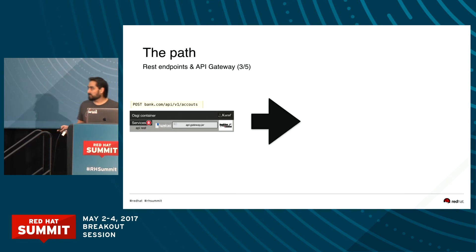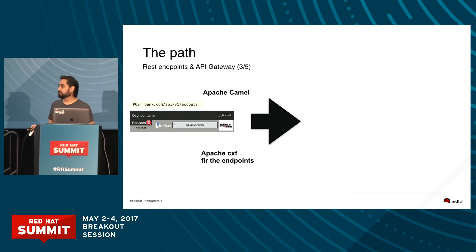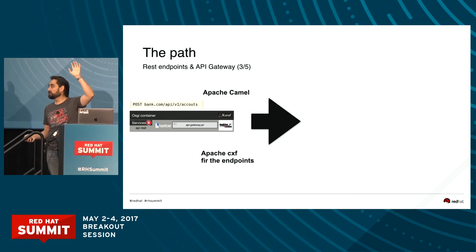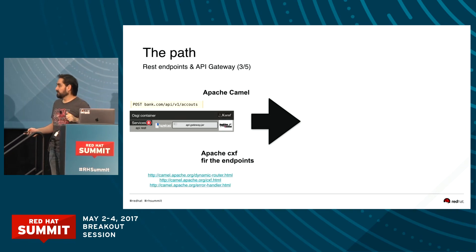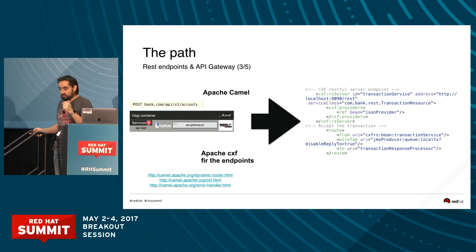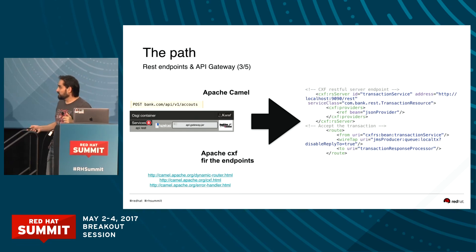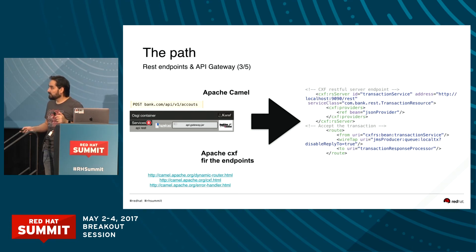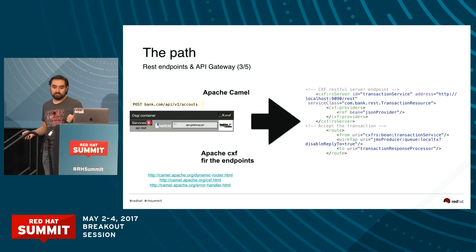In Camel, it's really easy to do it. How many of you know Camel? How many know Apache CXF? In Camel I start to create with a few lines of DSL the endpoints, using CXF and Apache Camel. Then I just start to route messages dynamically.